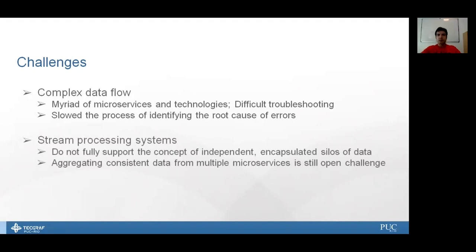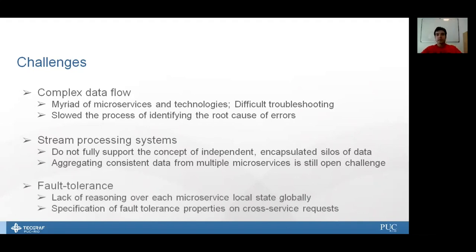Regarding stream processing systems, we tried to adopt this function-based approach, but we also created other kinds of stream processing systems. We find that they do not fully support this concept of independent encapsulated state that microservices are about. One example is aggregating consistent data from multiple microservices is still another challenge. You may have stale data on one side and consistent data on the other. How do you join it to be processed in real-time with those streams incoming? Also, fault tolerance is hard to reason upon each microservice's local state in a global manner. It's an open question how to specify this fault tolerance properties, especially on cross-service requests.